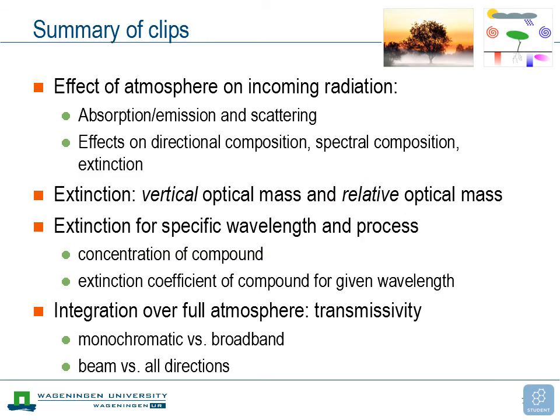The effect of the atmosphere on incoming radiation has to do with absorption, emission, and scattering. These processes affect the directional composition — direct versus diffuse radiation — but also the spectral composition, determining which wavelengths are scattered or absorbed more. The main effect of the atmosphere is to remove part of the radiation. This extinction can be expressed in terms of vertical optical mass and relative optical mass, and it is different for specific wavelengths.